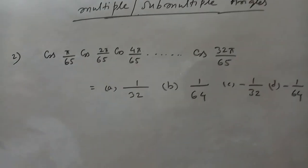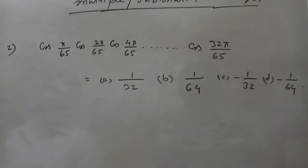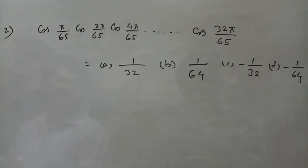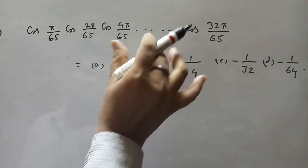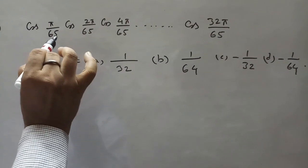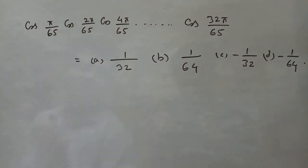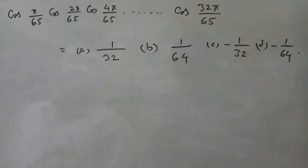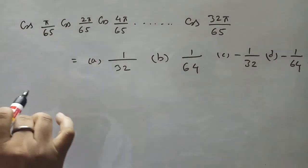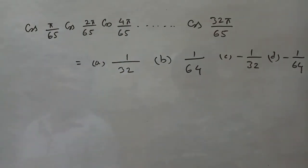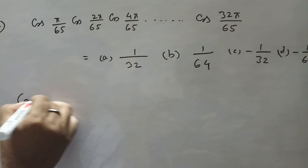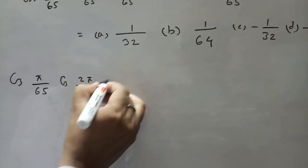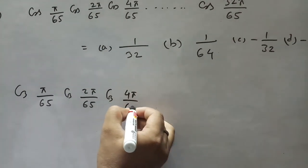For this type of sum, if we carefully observe the angles of all the cosines — π/65, 2π/65, 4π/65, and so on up to 32π/65 — all angles are multiplied by 2 successively. The number of terms is: cos(π/65), cos(2π/65), cos(4π/65), and so forth.